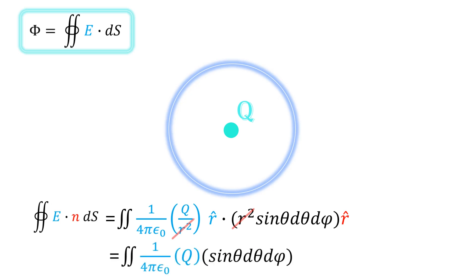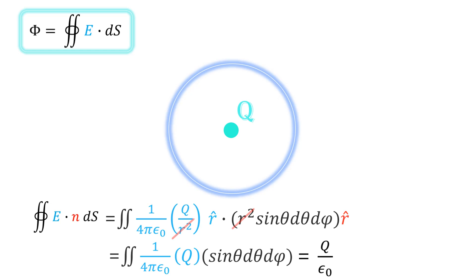So the formula becomes this. As we know, theta ranges 0 to π and phi ranges 0 to 2π. So the result of this calculation is Q divided by ε₀. Wow, we got the equality with definition of flux. This equality means the flux inside a closed surface is the same as this result.